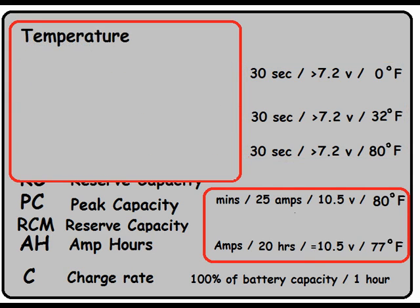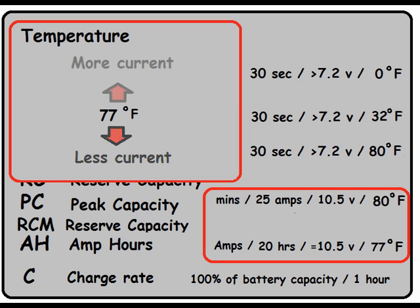Finally, let's take a look at temperature. Deep cycle batteries are rated at 77 degrees Fahrenheit. As the temperature drops, available current from the battery will also drop. On the other hand, as temperature increases, the battery will give you more current. Off the top of your head, that sounds like a great idea, but there is a drawback.